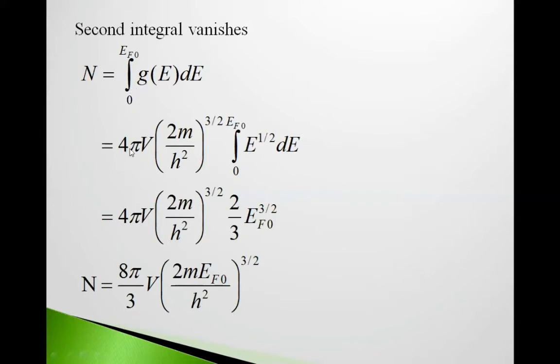g(E)dE equals 4πV(2m/ℏ²)^(3/2) ∫₀^(EF0) E^(1/2)dE = 4πV(2m/ℏ²)^(3/2) × (2/3)EF0^(3/2). Therefore, N = (8π/3)V(2mEF0/ℏ²)^(3/2).